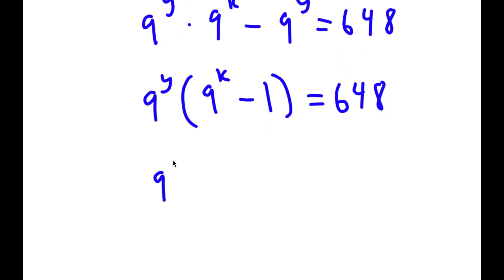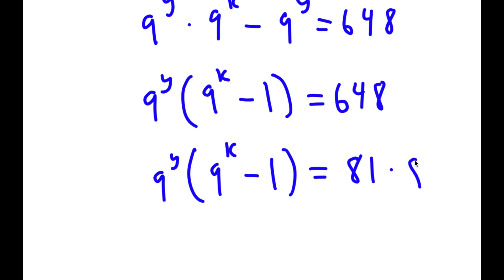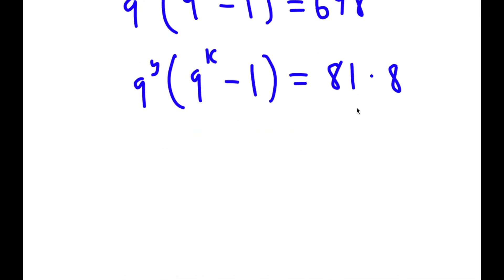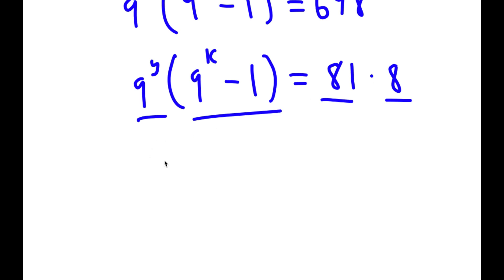Now, 648 is the same as 81 times 8. Notice that 81 is an odd number and 8 is an even number. 9 to the power of y is obviously going to be an odd number, so we can say 9 to the power of y equals 81. And 9 to the power of k minus 1 will be even — since 9 to the power of k is odd, and odd minus 1 is even — so 9 to the power of k minus 1 equals 8. This gives two equations: 9 to the power of y equals 81, and 9 to the power of k minus 1 equals 8.